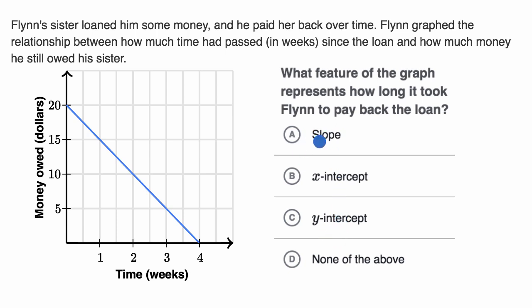The first choice is the slope. The slope tells us how much we change in the vertical direction for any given change in the horizontal direction.